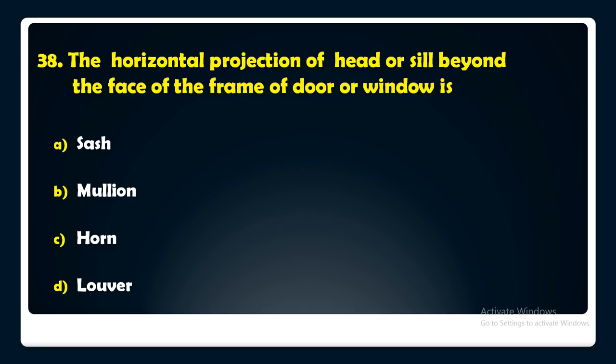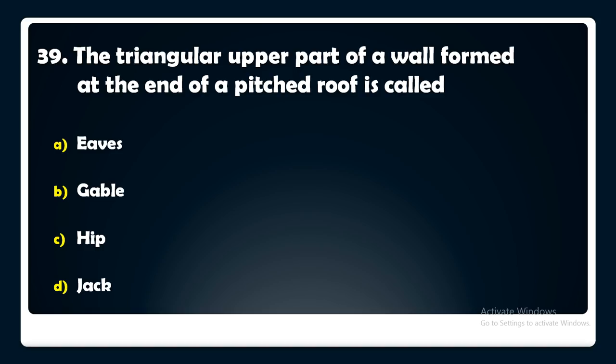The triangular upper part of a wall formed at the end of a pitched roof is called — eaves, gable, hip, or jack? The answer is: the triangular upper part of a wall formed at the end of a pitched roof is called a gable.